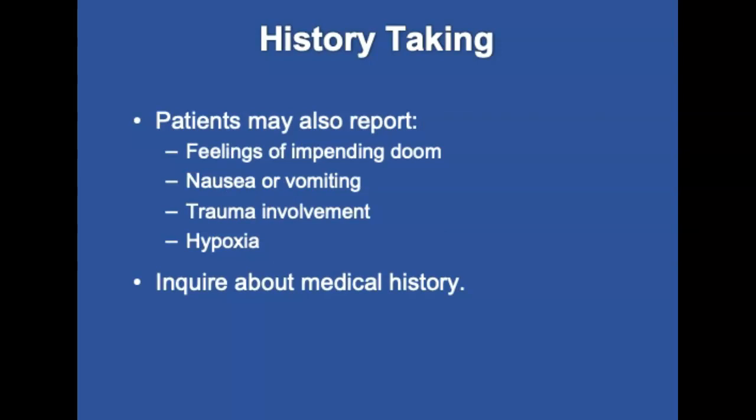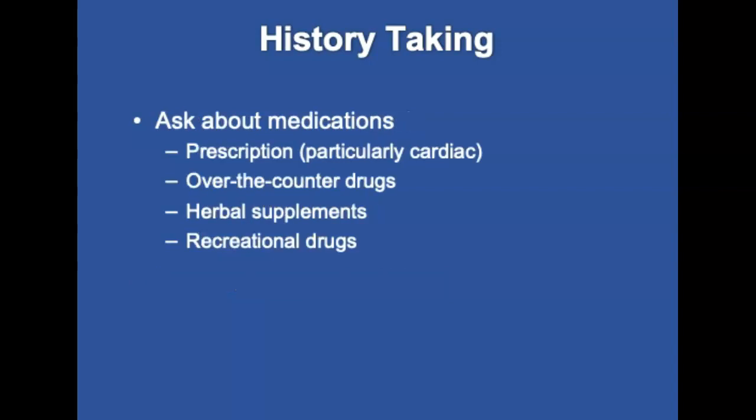Patients may report other related symptoms as you explore their history, including feelings of impending doom, nausea or vomiting, trauma involvement, or hypoxia. After exploring the chief complaint, inquire about pertinent aspects of the patient's medical history. Ask about medications — is the patient taking them as instructed? When did they last take them? Common cardiac medications include anti-dysrhythmics such as digoxin, amiodarone, or verapamil; anticoagulants such as Plavix or warfarin (Coumadin); and ACE inhibitors such as Vasotec.